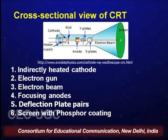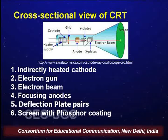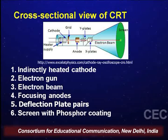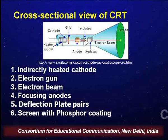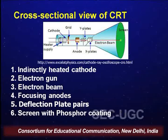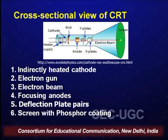The cathode is always indirectly heated. The cathode is a material which is the source of electrons — it needs to be heated for the electrons to gain sufficient energy to leave the cathode material. This heating is done in an indirect manner, because the moment any material loses electrons it starts accumulating positive charge. This accumulation of positive charge within the cathode material would make it increasingly difficult for the next level of electrons to be emitted.